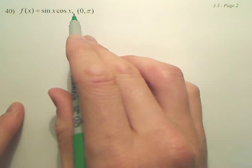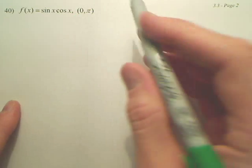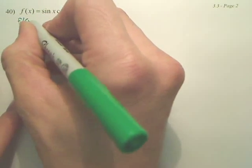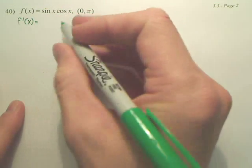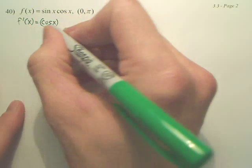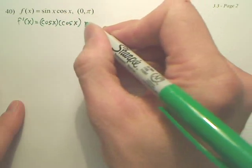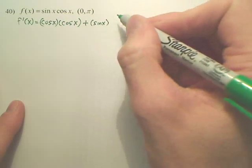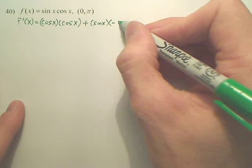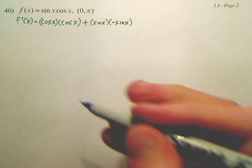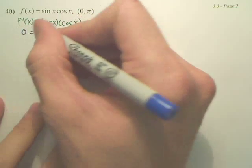Let's find the critical numbers first for this problem. To find critical numbers, you take the derivative and, wonderfully, product rule. Derivative of sine is cosine, leave cosine, plus leave sine, derive cosine. Now, do you understand we're going to be setting this equal to zero?